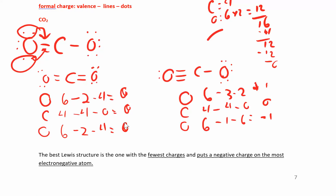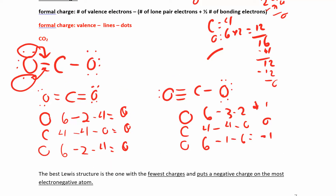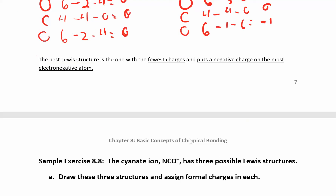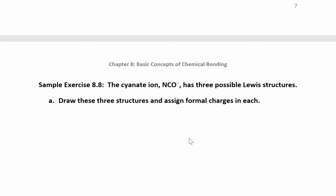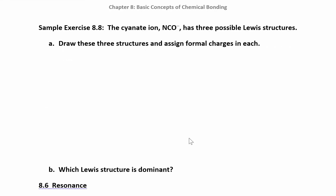The first CO₂ structure has formal charges of zero on all atoms, while the second structure gives +1, 0, −1 — which also adds up to zero, but those nonzero charges make it less favorable. The best structure is the one with the lowest set of formal charge numbers.